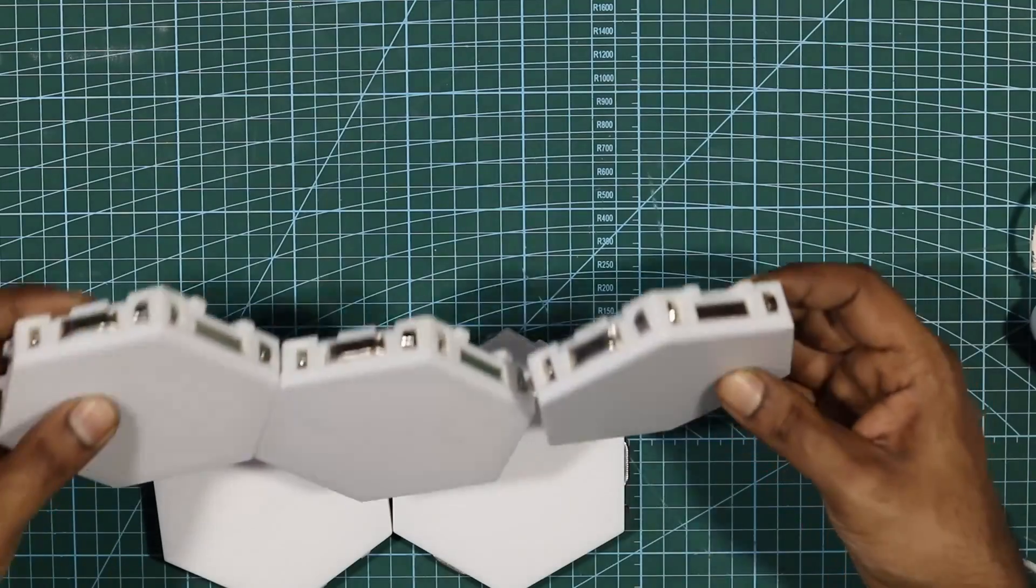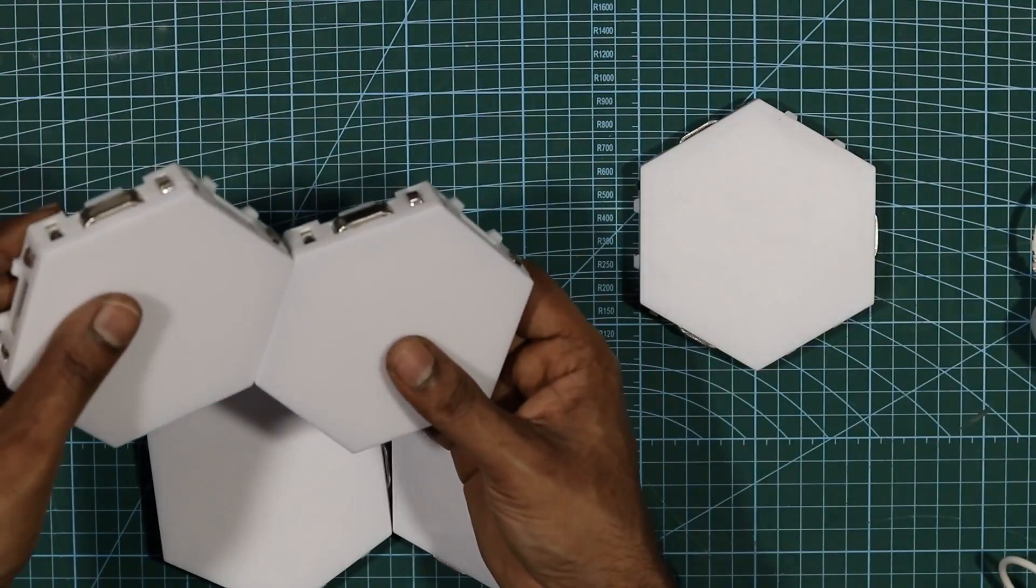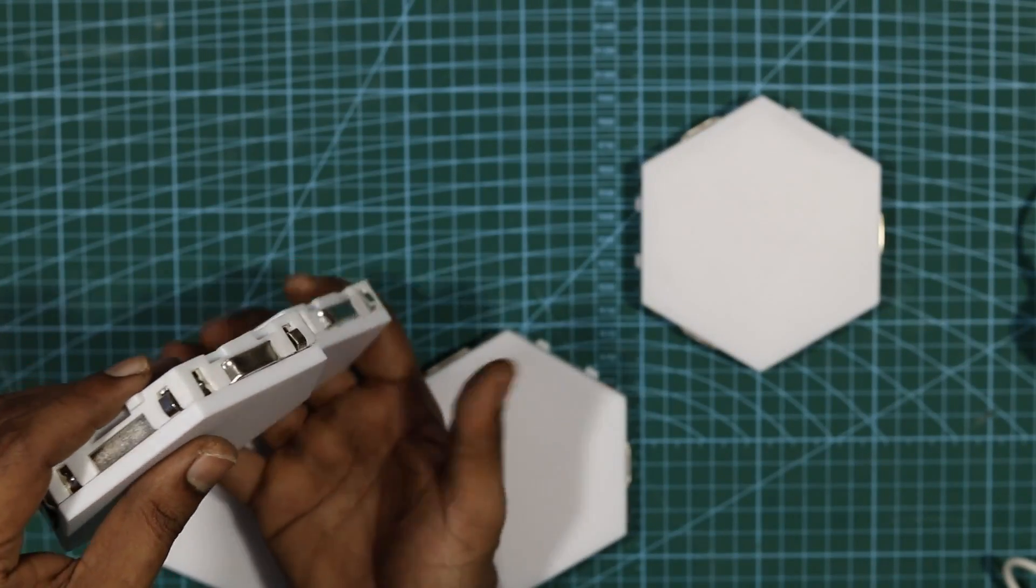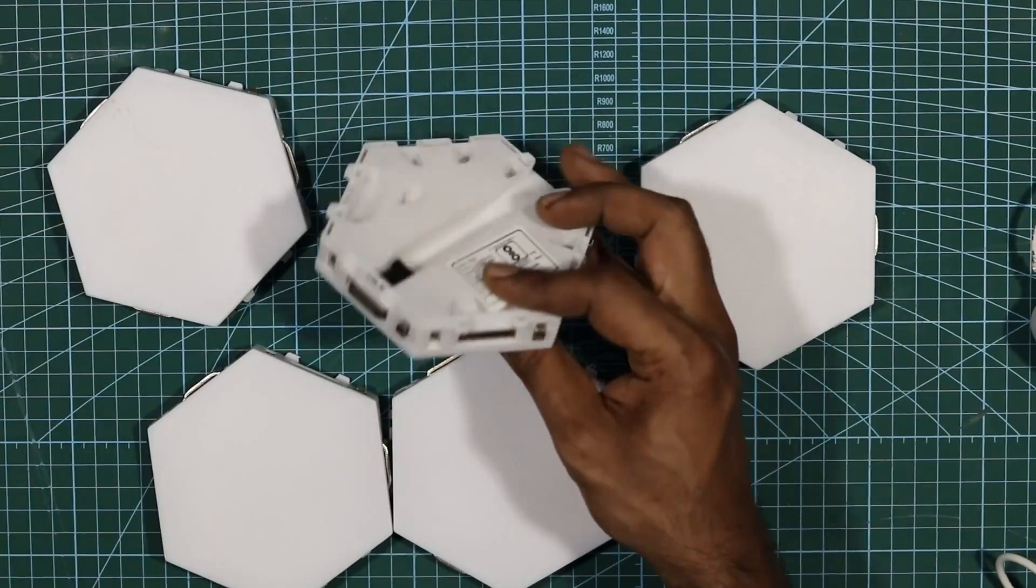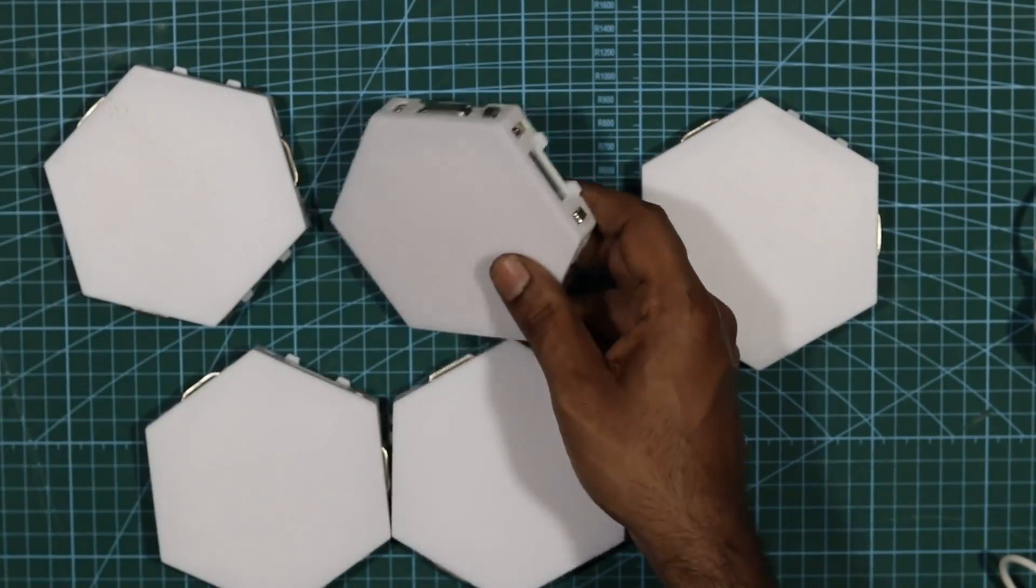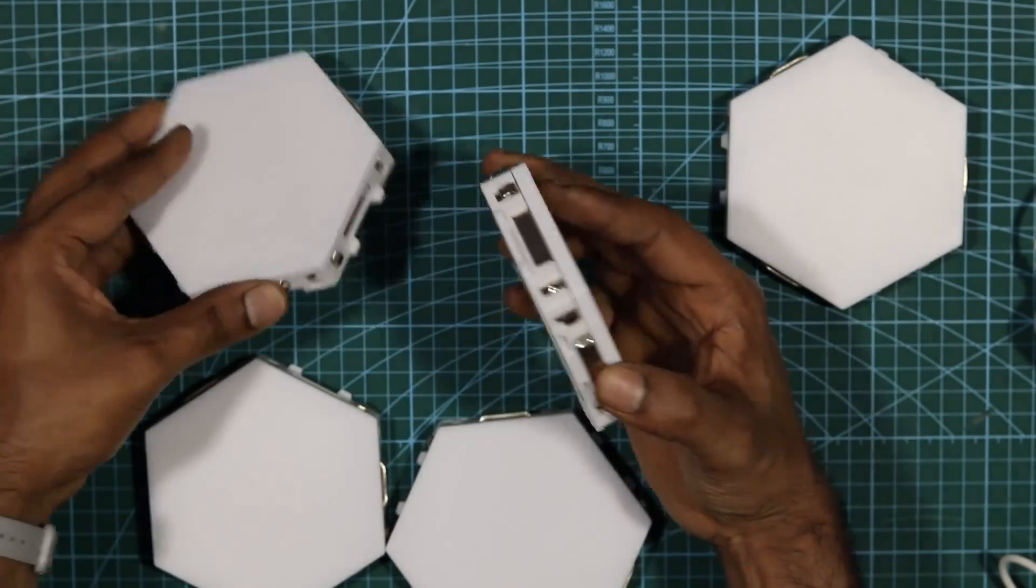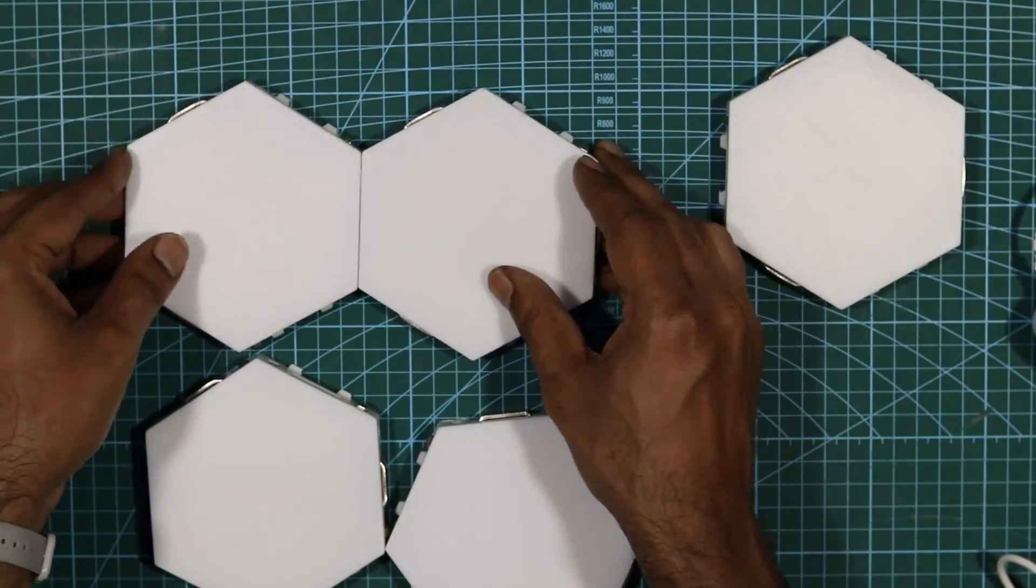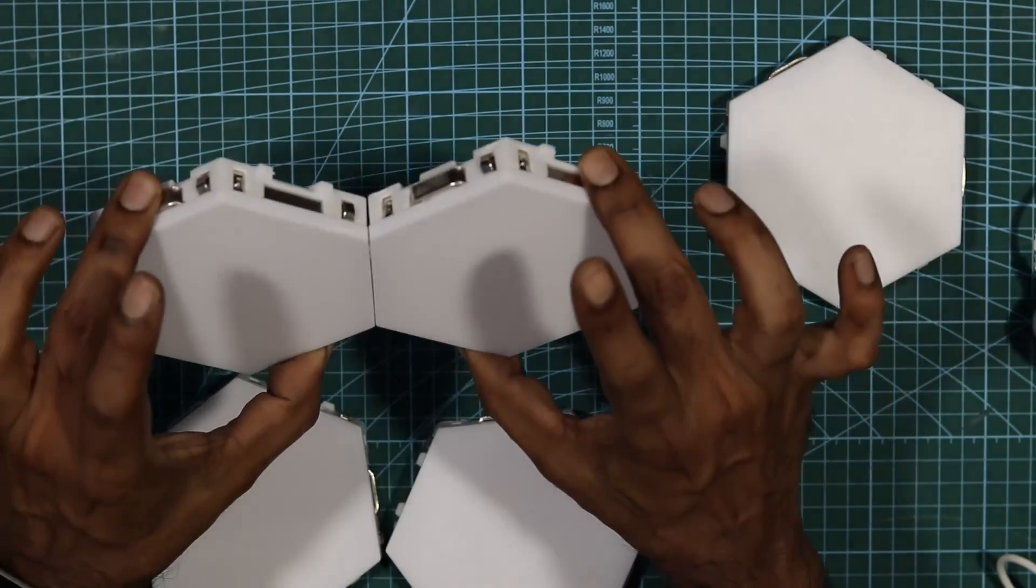So the magnets are not that strong as such. It's just to have a secure connection. Anyways, you're going to use a sticky tape and mount it to the wall, right? So you don't need strong magnets there. As long as there's a proper secure connection, that should be more than enough.